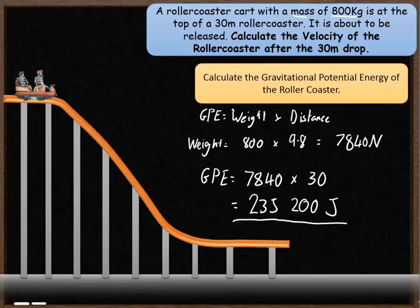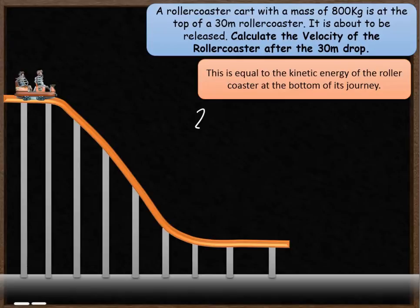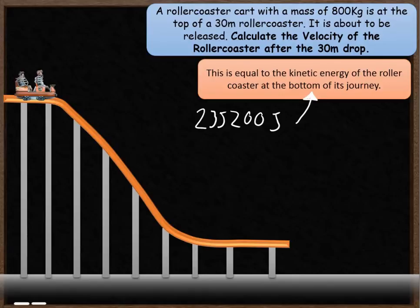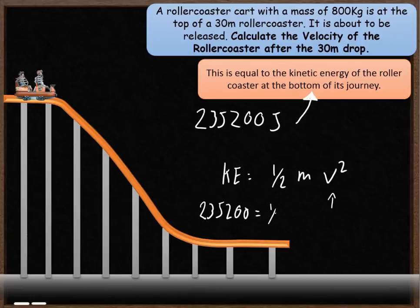That's how much gravitational potential energy the roller coaster has for this drop of 30 meters. That 235,200 joules of gravitational potential energy is how much kinetic energy the car will have at the bottom of its journey. As soon as it's released it transforms into kinetic energy, so at the bottom there's 235,200 joules. We can then use the kinetic energy formula — half times mass times velocity squared — to work out the velocity. You know the kinetic energy and the mass is 800. Pause the video and see if you can find the velocity.